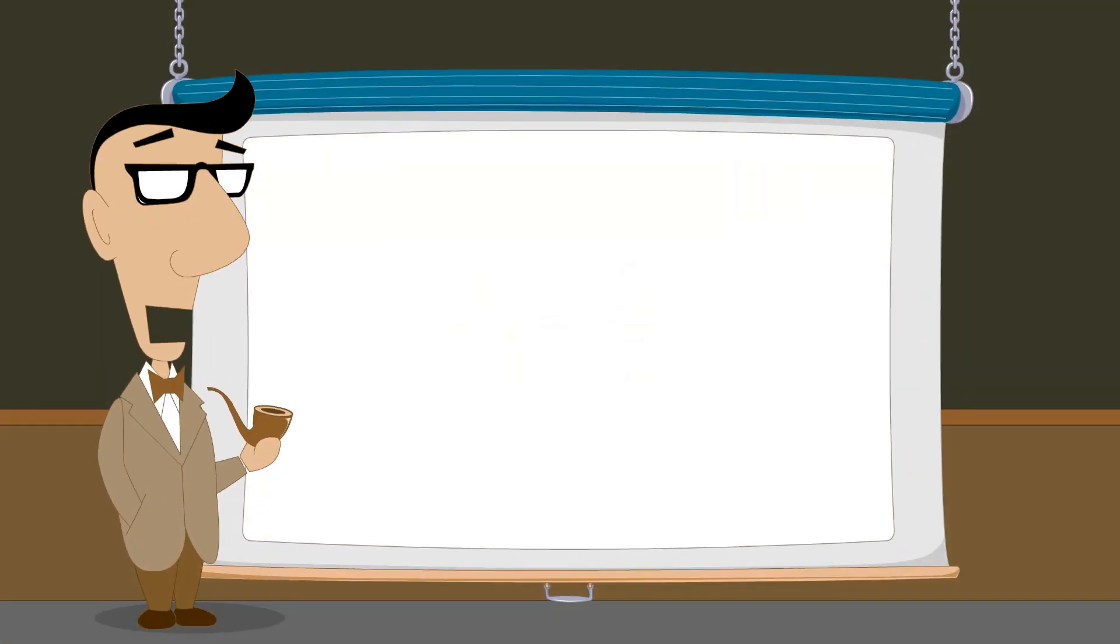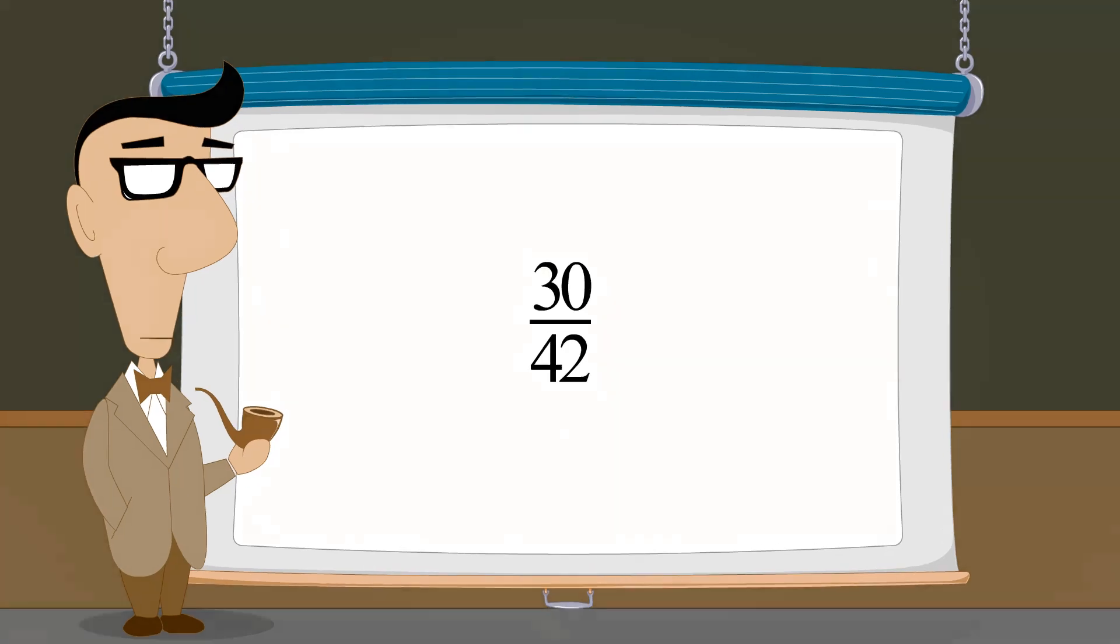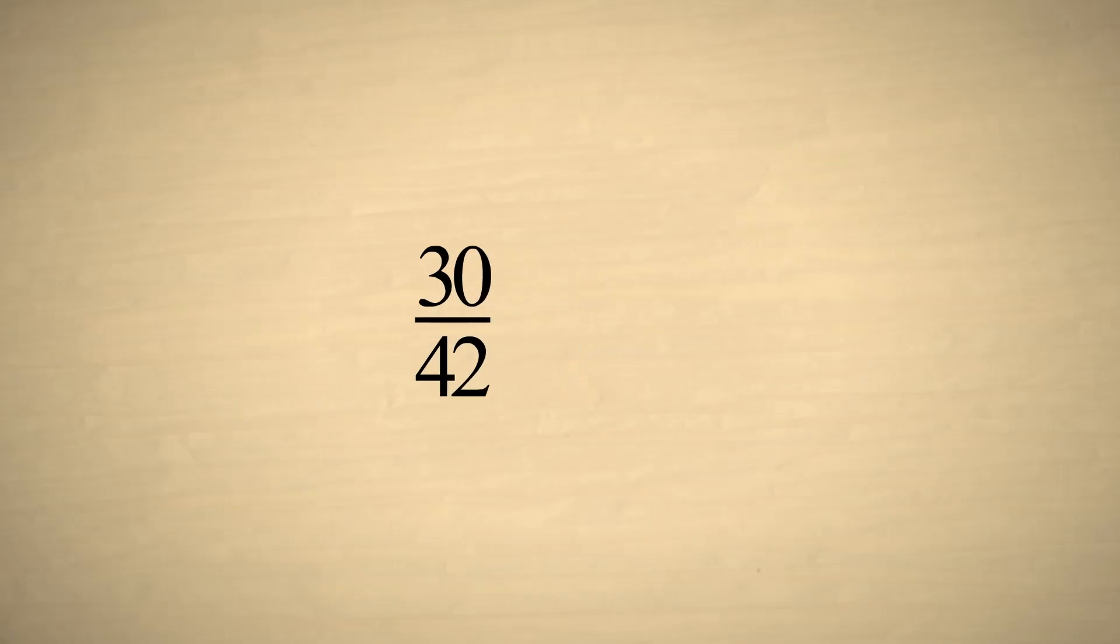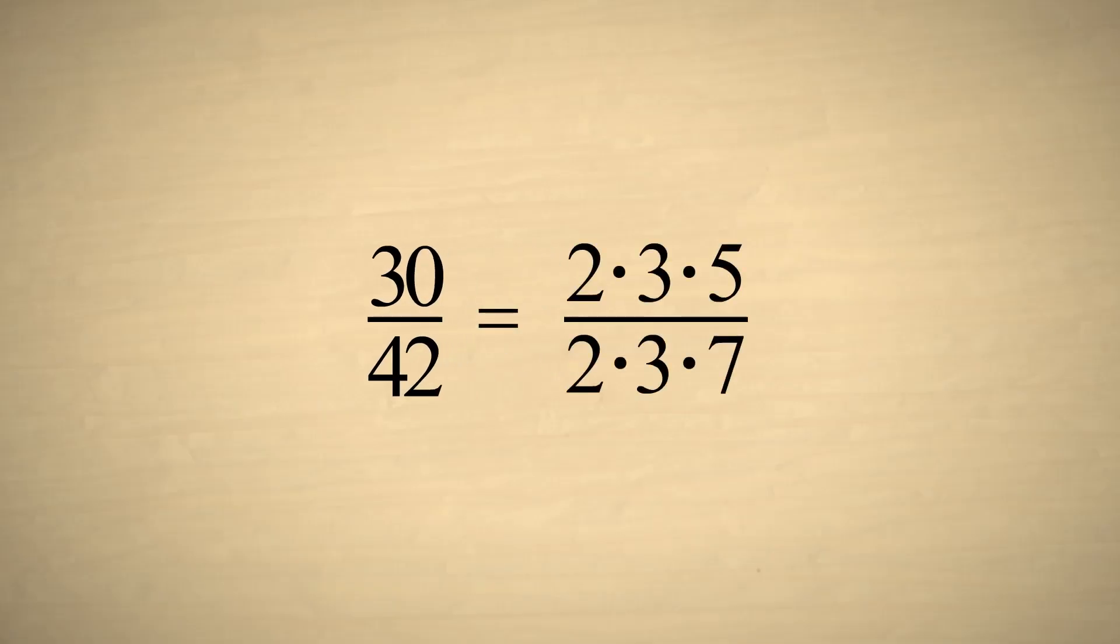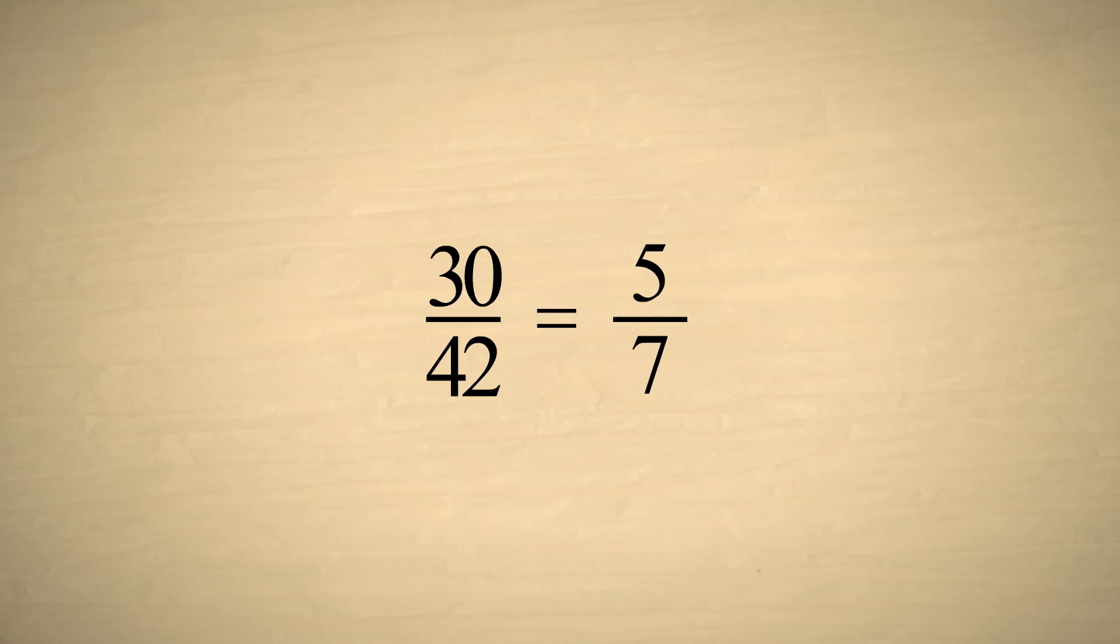As another example, let's simplify the fraction thirty-forty-seconds. Factoring the top and bottom, we see that they both have a factor of two and a factor of three in common. After canceling out the factors of two and three, we are left with five-sevenths.